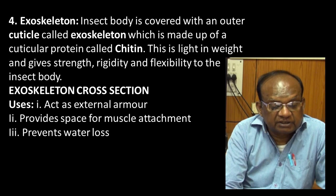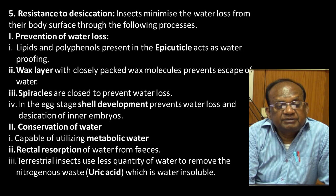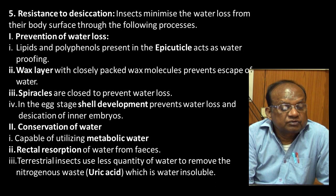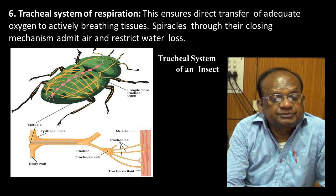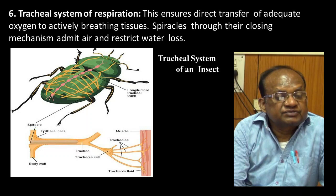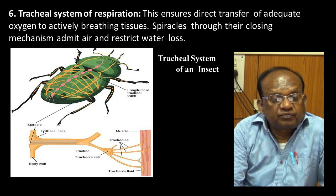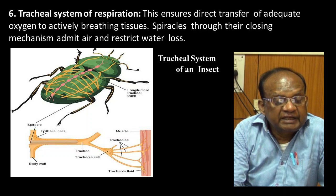Fifth is resistance to desiccation. Insects minimize water loss from their body surface through a wax layer, spiracles, conservation of water, and rectal resorption. Sixth is the tracheal system of respiration. Unlike other organisms, insects ensure direct transfer of oxygen to the actively breathing tissues. Spiracles control admission of air and restrict water loss. Tracheae are spread over the insect body and serve as the respiratory organ.